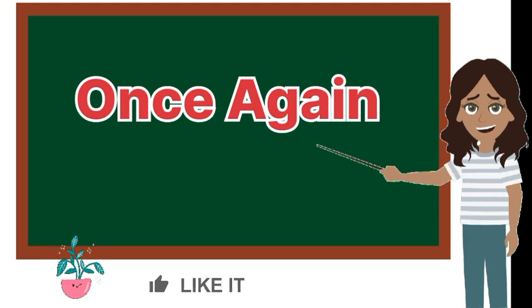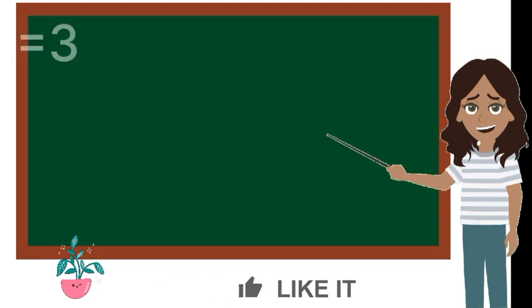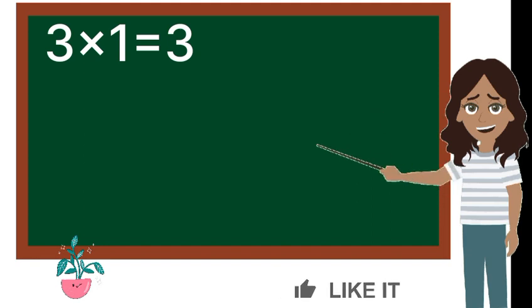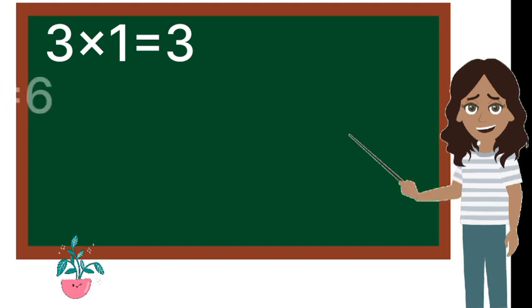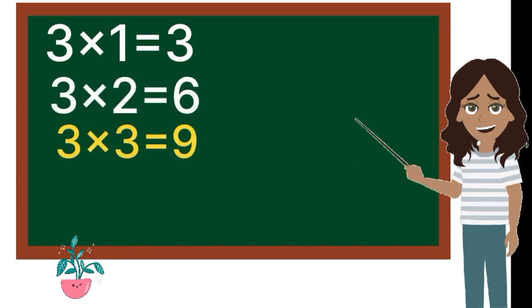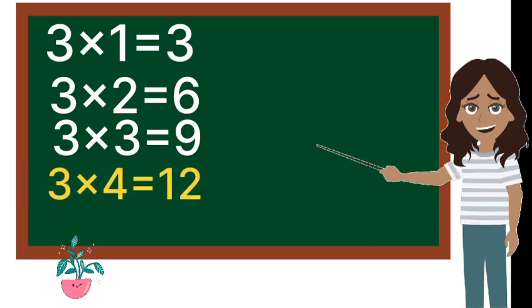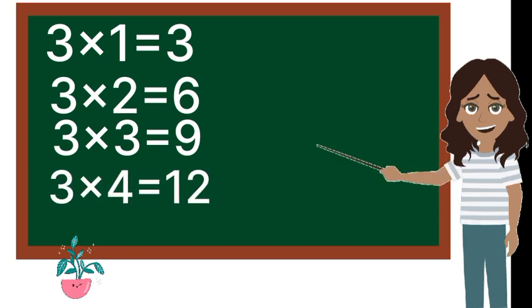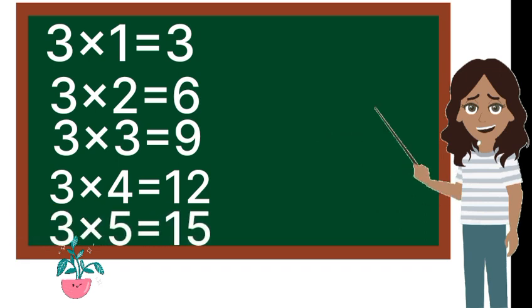Once again: 3 1s are 3, 3 2s are 6, 3 3s are 9, 3 4s are 12, 3 5s are 15.